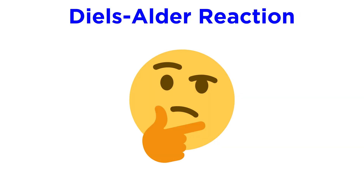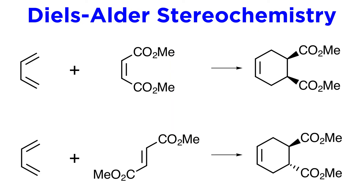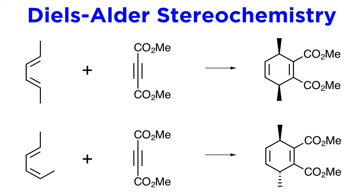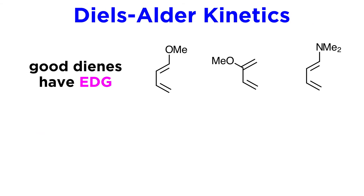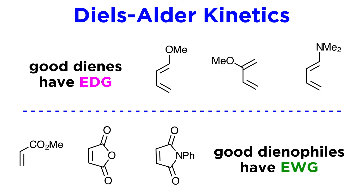Returning to the Diels-Alder reaction, let's recall some other aspects relevant as we move forward with pericyclic reactions. The reaction is stereospecific — whatever the stereochemistry of the dienophile, that will be retained in the product. If a cis alkene, the substituents will be cis in the product; if a trans alkene, then trans in the product. We can say something similar about substituents on carbons 1 and 4 of the diene. The most favorable configuration is a diene with one or more electron-donating substituents, like alkyl, hydroxyl, alkoxy, or amino, and a dienophile with one or more electron-withdrawing substituents, like carbonyl-containing functional groups.